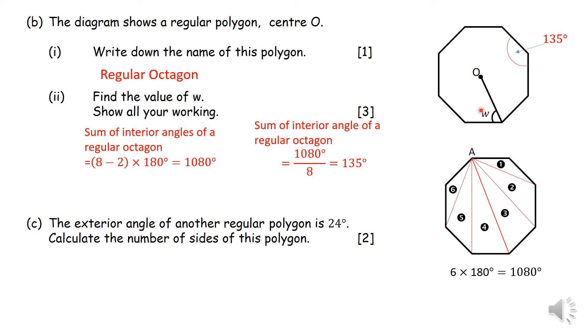But that is the sum of the interior angle of an octagon. But we are not looking for that. We are also not looking for the sum of the interior angles, which is 1080. We are looking for what W would be. Since that line comes from the center, it will cut this 135 into 2, meaning that W would be 67.5 degrees.